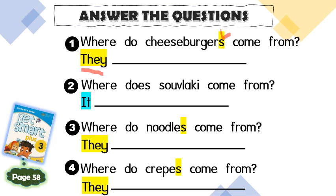So, they come or they comes? Think of the rules. If the subject is singular, you have to add S or ES; but for plural subject, you just use the base form. They come or they comes? We use 'they come' because the subject is plural.